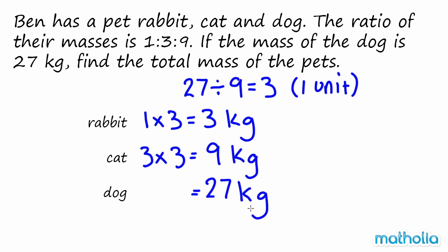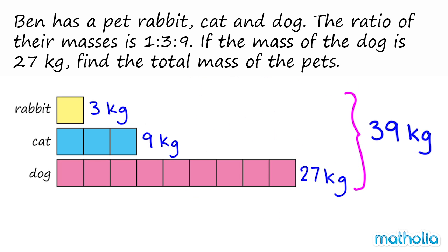Add the masses together to find the total. 3 plus 9 plus 27 equals 39. So the total mass of Ben's pets is 39 kilograms.